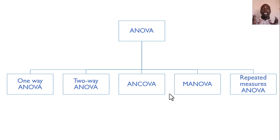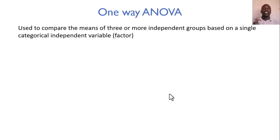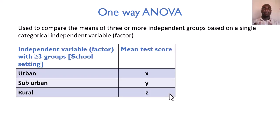We shall start with one-way ANOVA, which is used to compare the means of three or more independent groups based on a single categorical independent variable. For example, we have marks for students who came from different schools, categorized into three: those from an urban setting, sub-urban, and rural setting.